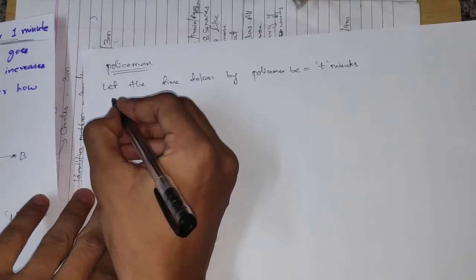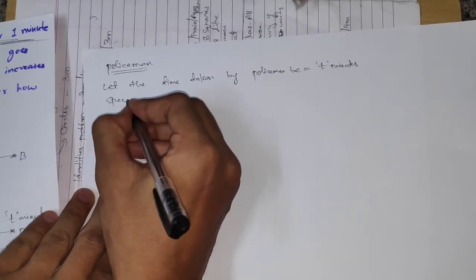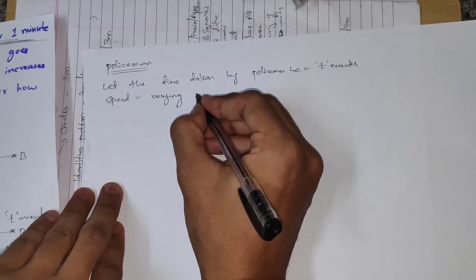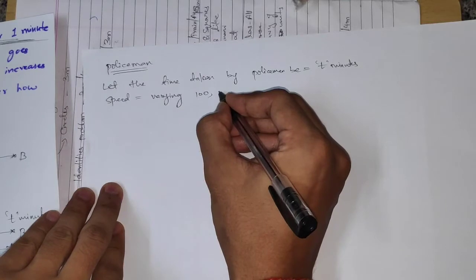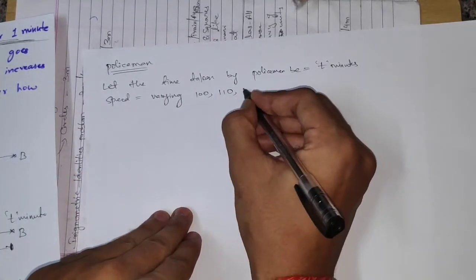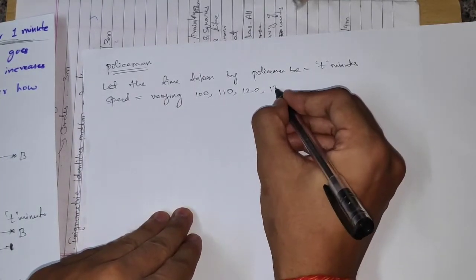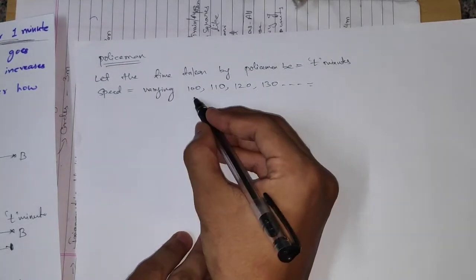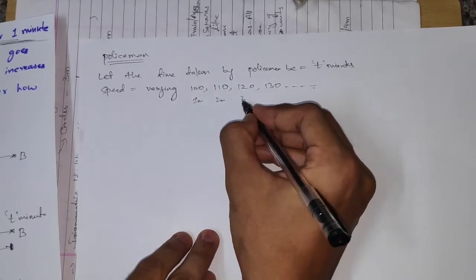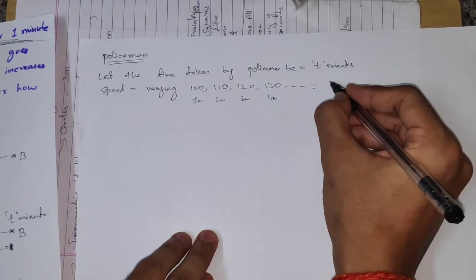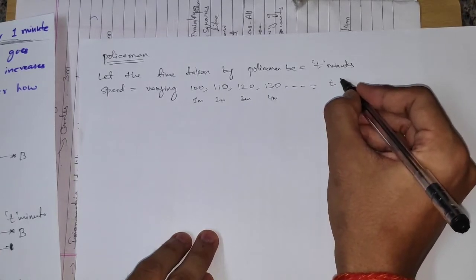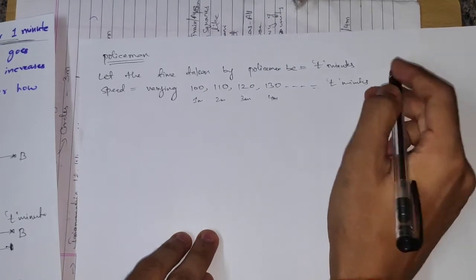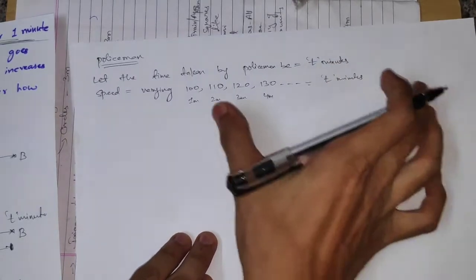Let the time taken by the policeman be T minutes. The police will reach point B in T minutes. The speed is varying: first minute 100, then increase by 10 each minute — so 100, 110, 120, 130 — up to T minutes. This is an arithmetic progression.